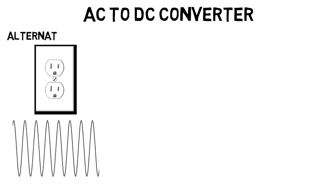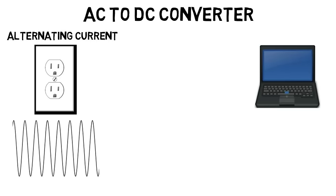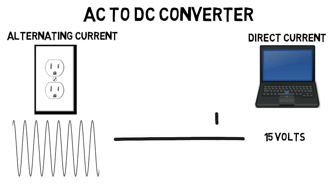Which in turn creates an alternating current, or AC. If you want to charge your laptop, you need a constant voltage, like maybe 15 volts, which causes a direct current, or DC. So how do we go from that changing voltage to a constant one, or AC to DC?